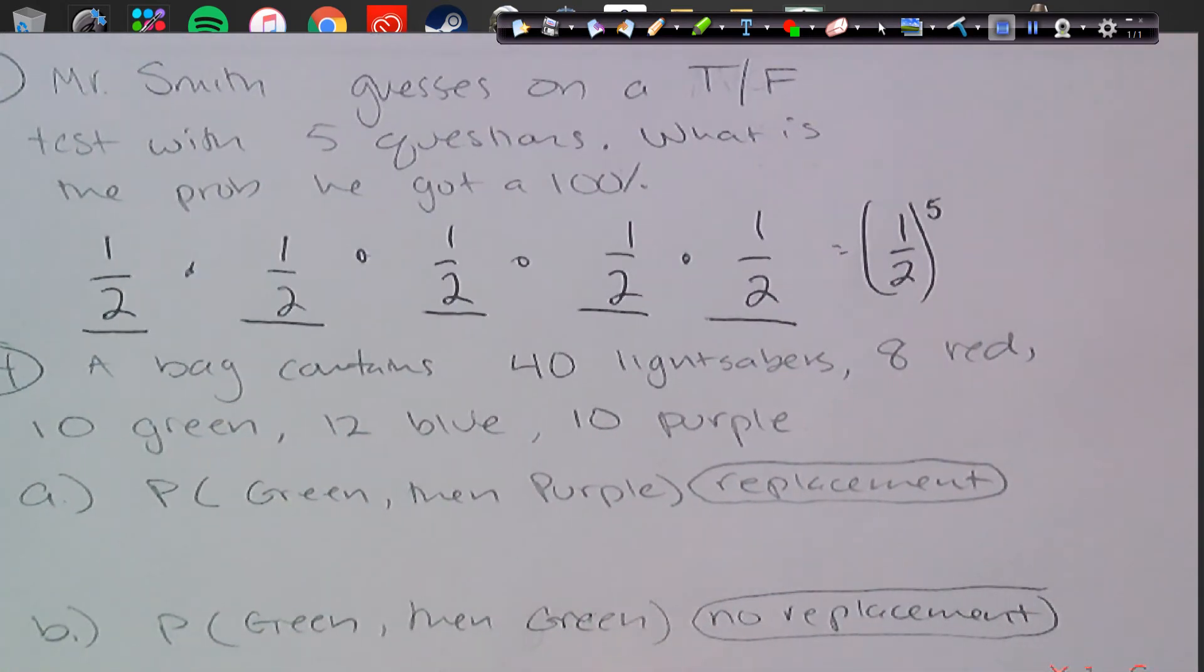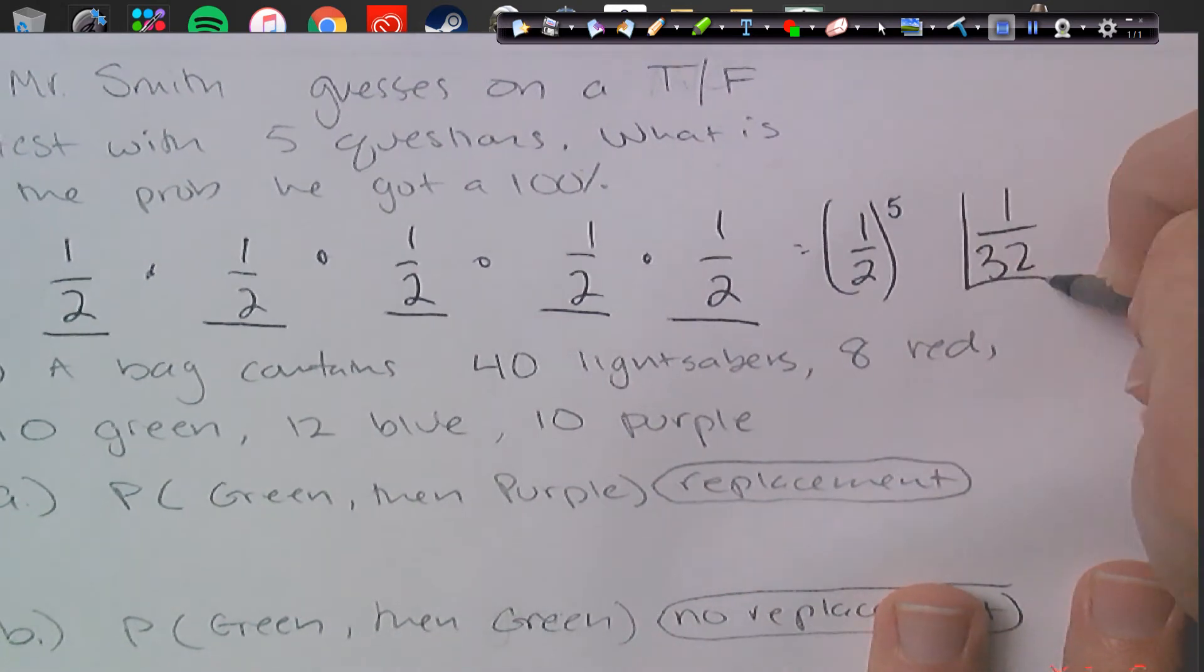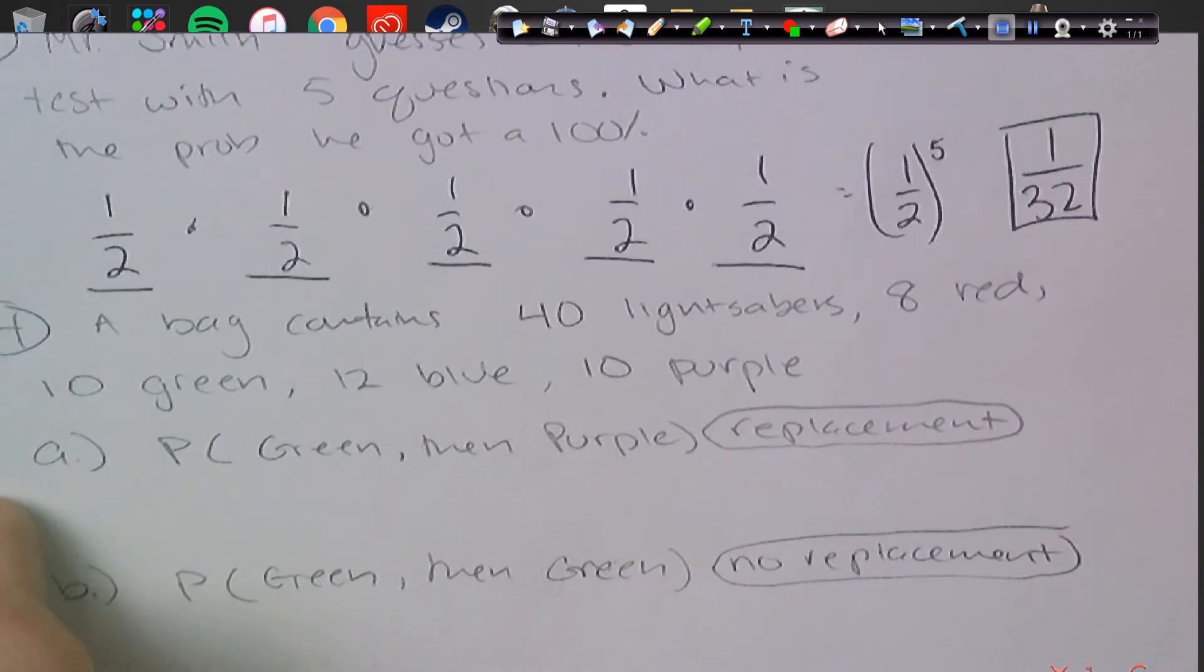So we eventually end up with 1 half to the 5th power. Okay, well, 1 to the 5th power is 1, and 2 to the 5th power, we got 2 times 2 is 4, times 2 is 8, times 2 is 16, times 2 is 32.